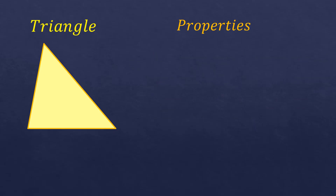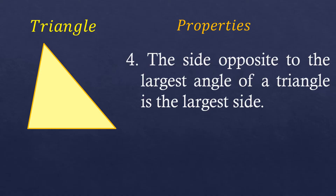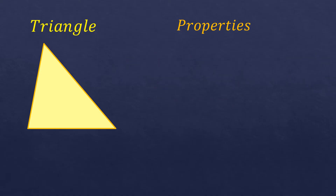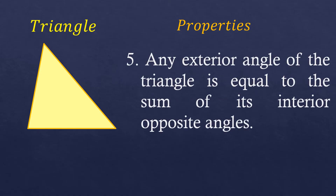The fourth property is the side opposite to the largest angle of a triangle is the largest side. And the last property is any exterior angle of the triangle is equal to the sum of its interior opposite angles.